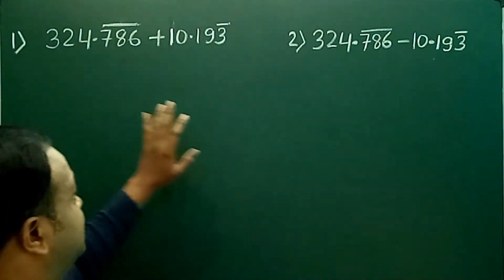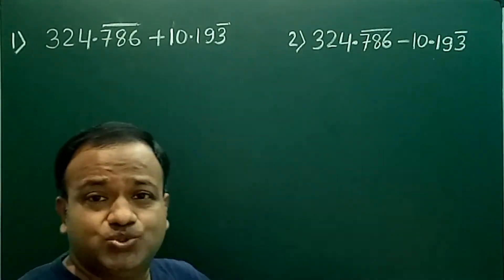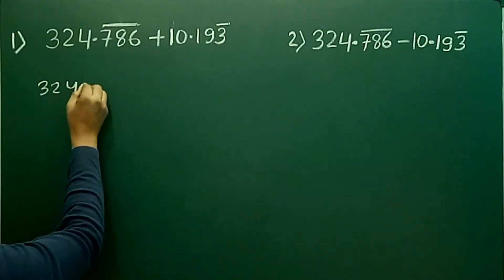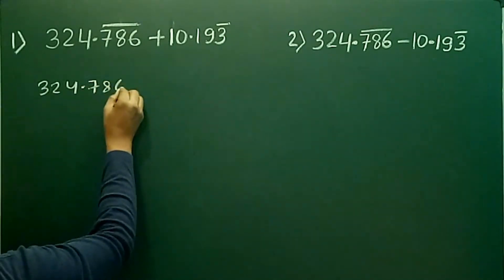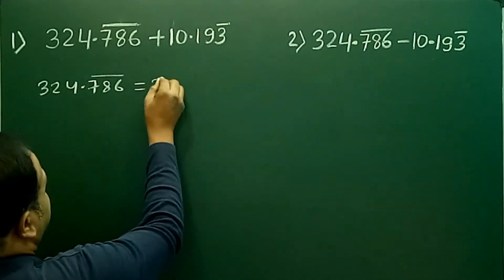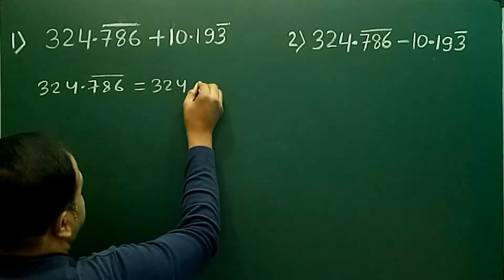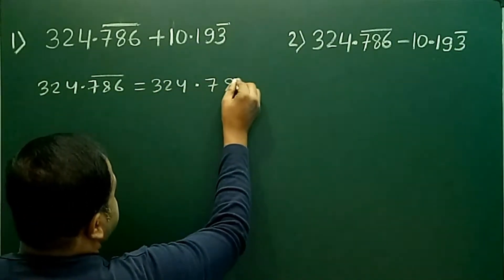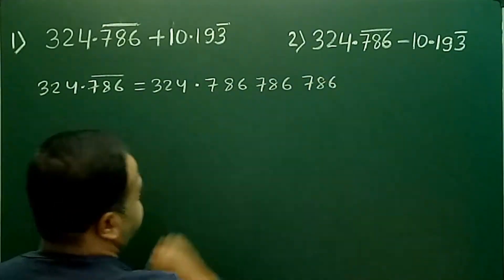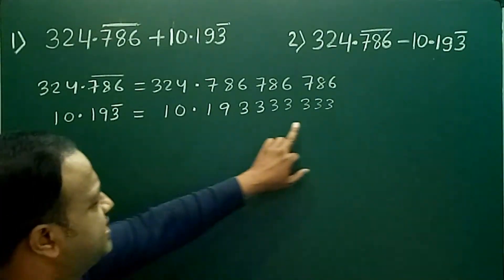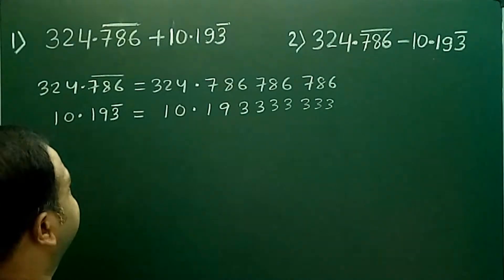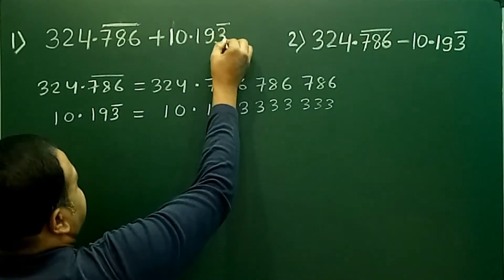Here I have chosen two similar numbers between which I am going to do addition as well as subtraction. We find here that 324.786, where 786 is the recurring part. It means we can write 786 786 786 repeatedly. This 3 has got bar so we can write 3 repeatedly.